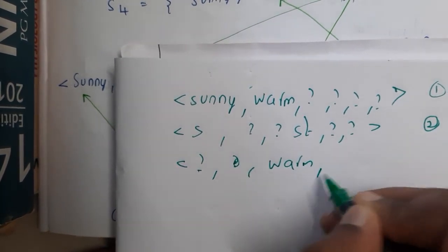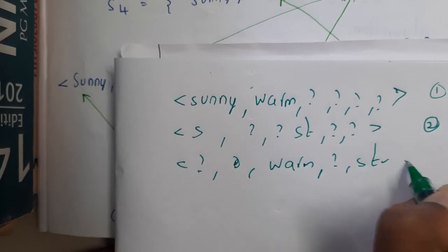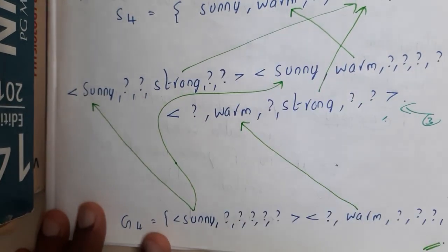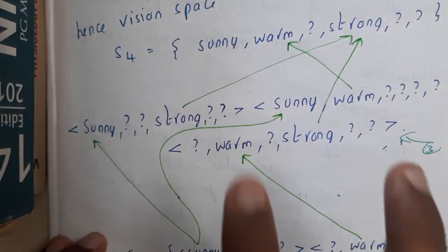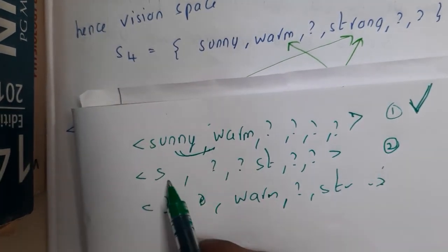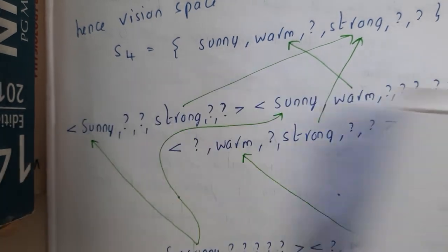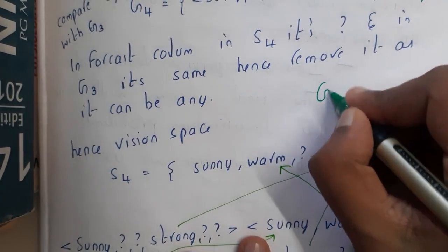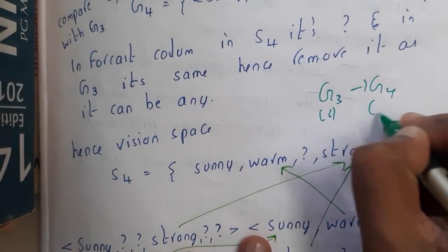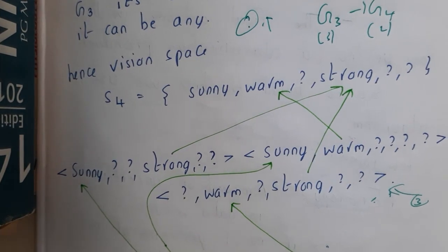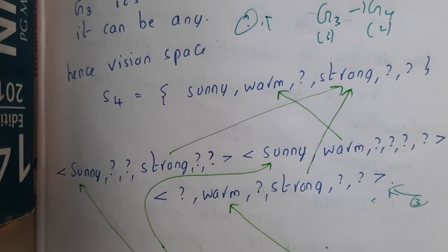So you get the exact combinations by simply combining them — multiplying them together gives results that reduce to two-parameter hypotheses: sunny and warm, sunny and strong, and warm and strong. I hope everyone got a clear idea. The only correction I wanted to make is how G3 became G4 — going from three parameters to two parameters. Whenever you multiply with question mark, you can remove it. Thank you for watching.